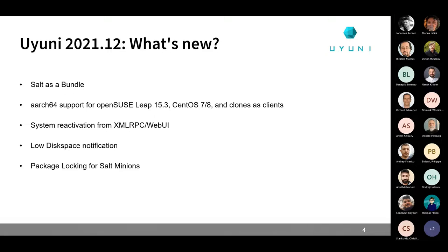We are also adding aarch64 support for openSUSE Leap 15.3, CentOS 7 and 8, and all the clones — Rocky Linux 8 and Alma Linux 8. The features available are exactly the same as for all other architectures, with some limitations around virtualization. You will be able to manage those operating systems on those architectures, install and remove packages, apply highstates, configurations, and so on.